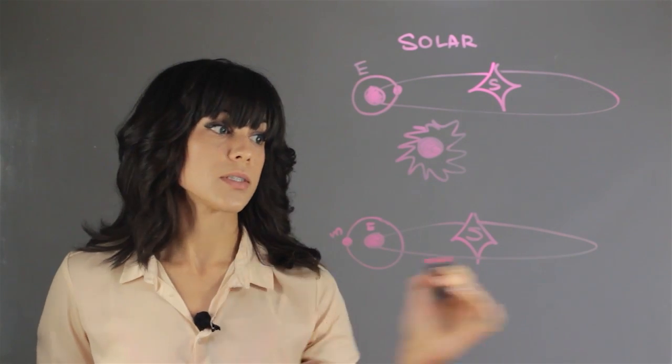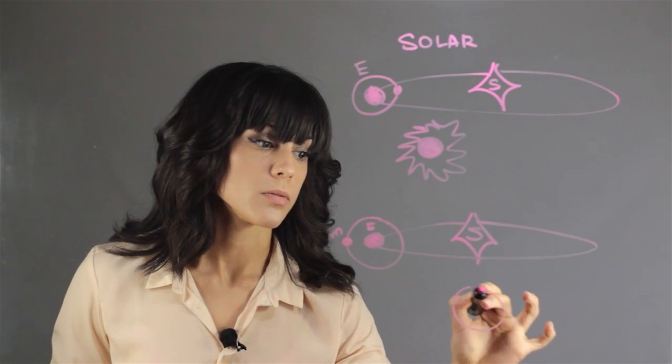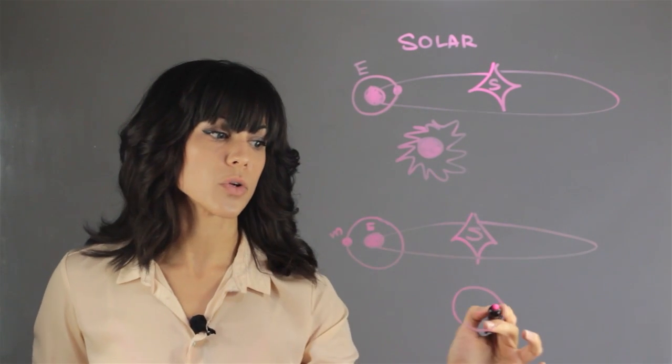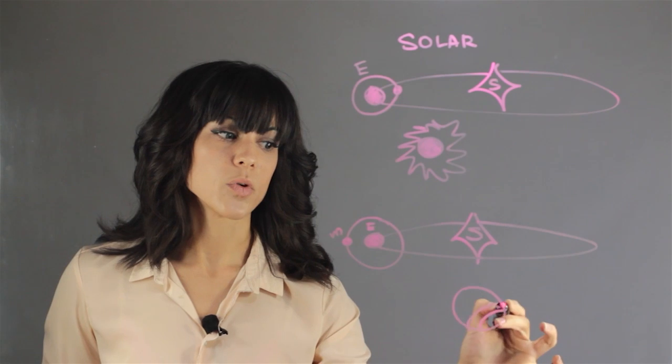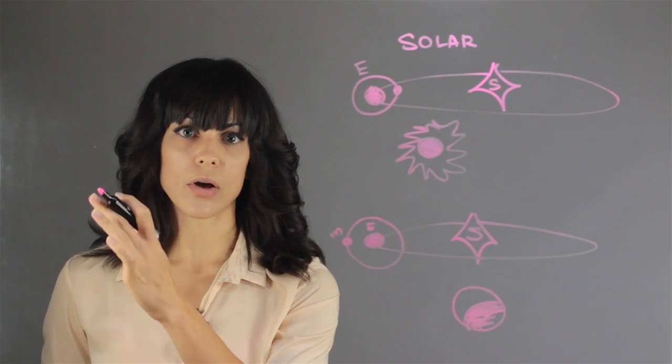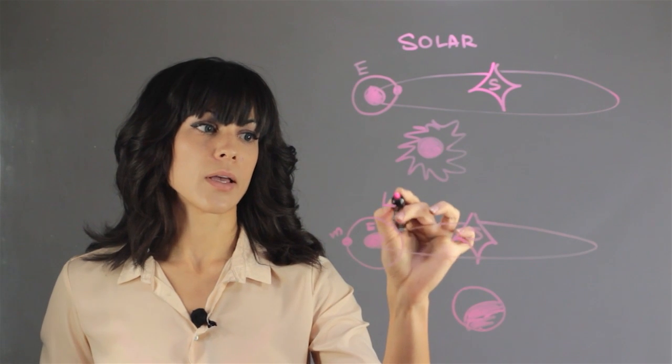And what you would actually see, let's say this was the Moon, you will see the shadow of the Earth being cast on the Moon. So the Moon will get significantly darker as that shadow sweeps along. And this is called a lunar eclipse.